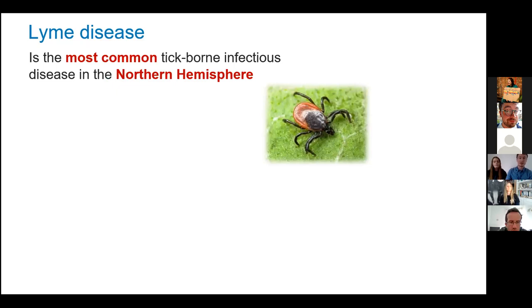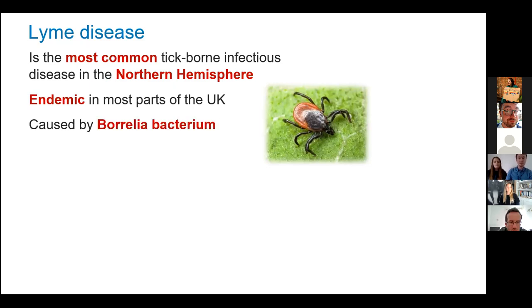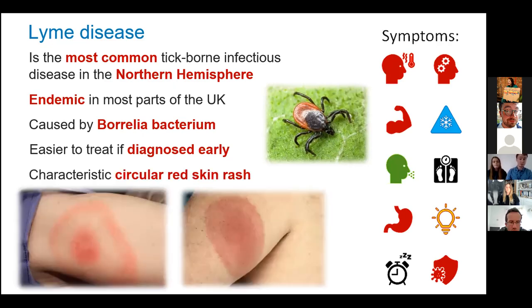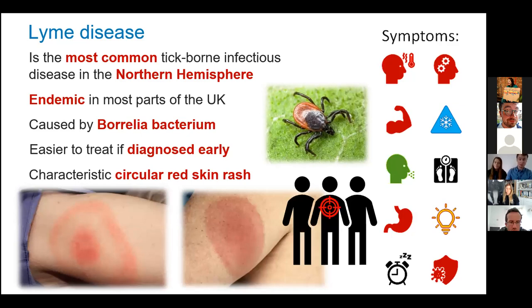The first one is Lyme disease. When we say tick-borne disease, most people think of Lyme disease, and we wouldn't blame you for that, as Lyme disease is the most common tick-borne infection in the Northern Hemisphere and it's also endemic to most parts of the UK. Lyme disease is caused by the bacterium Borrelia and is carried by the deer tick. The initial symptoms are flu-like, such as fever, headache, and stiff muscles, and the earlier it is caught, the more easily it is treated with antibiotics. The disease is also associated with the development of a bullseye rash around the tick bite site. However, this rash only occurs in about one in three people who are infected.